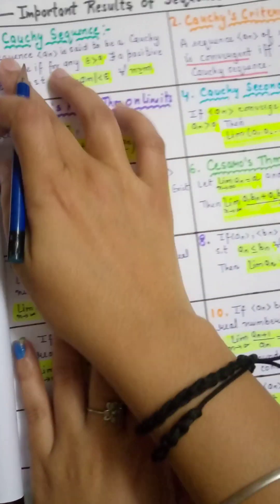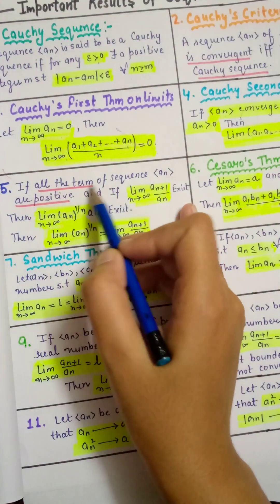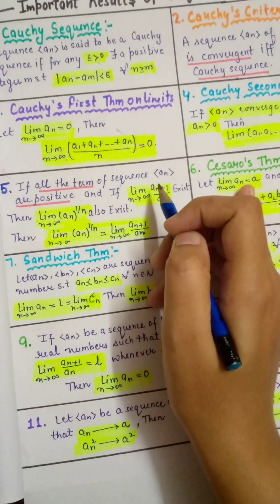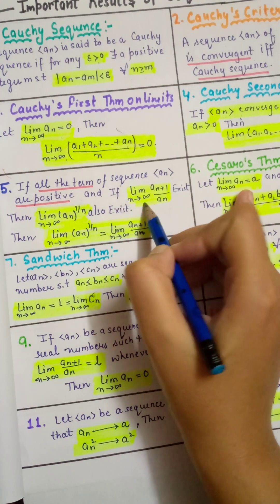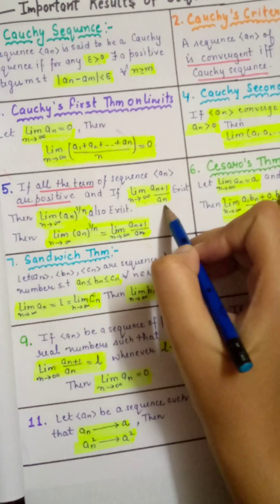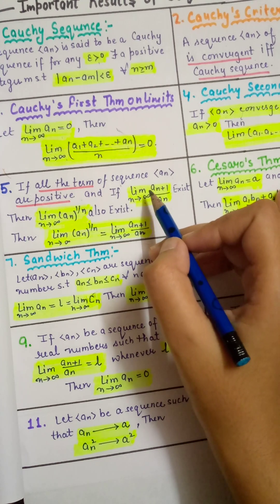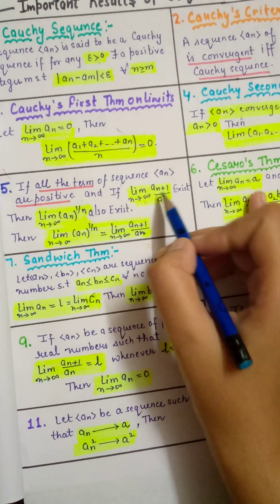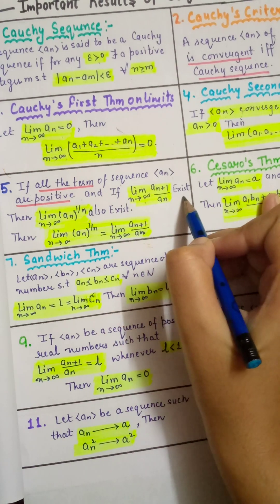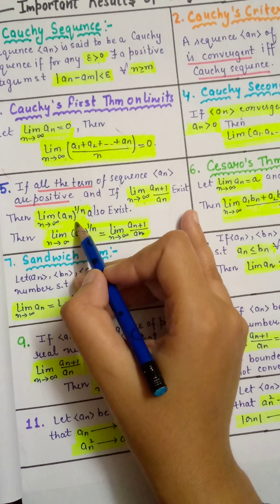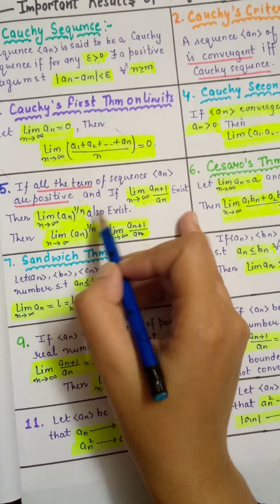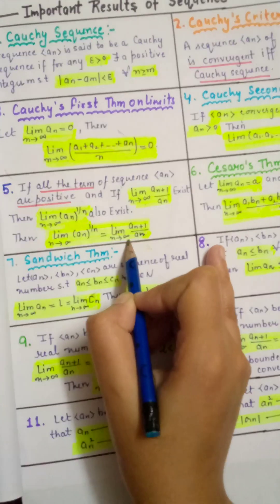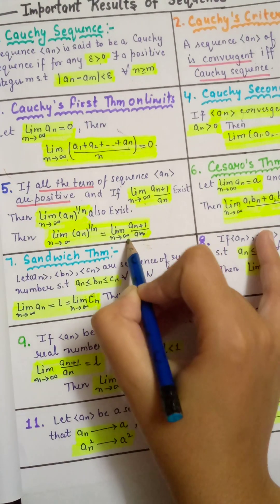Next important result: if all the terms of sequence AN are positive and if limit n tends to infinity of AN+1 upon AN exists, then limit n tends to infinity of AN^(1/N) also exists, and both of these limits are equal.